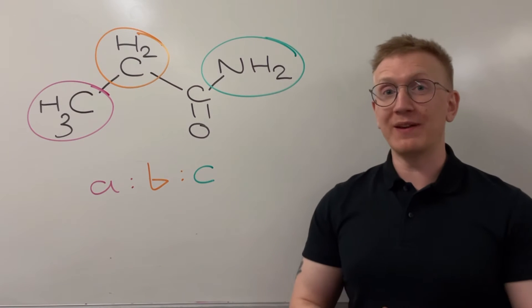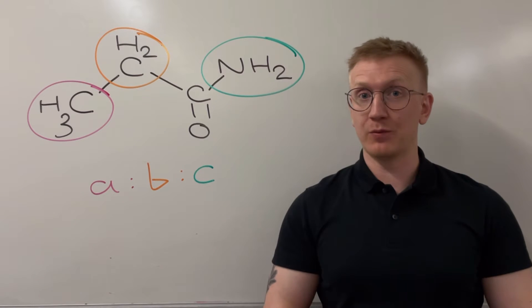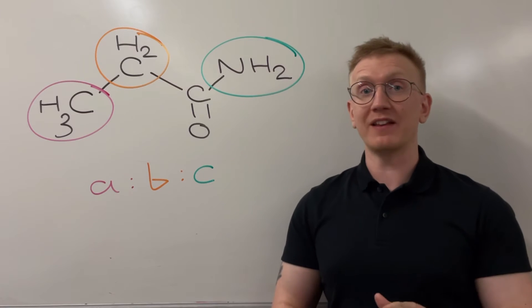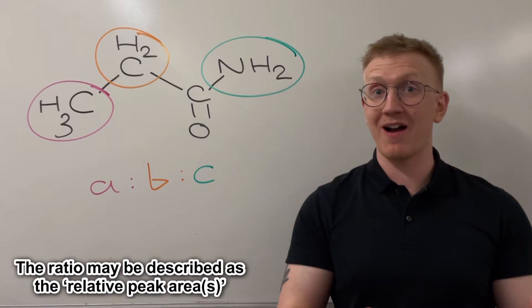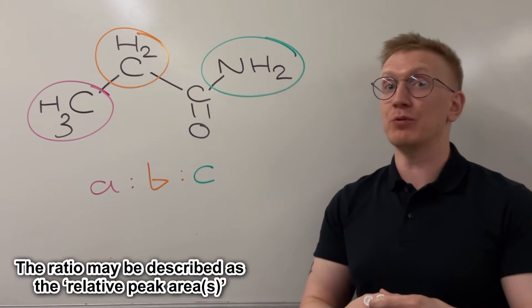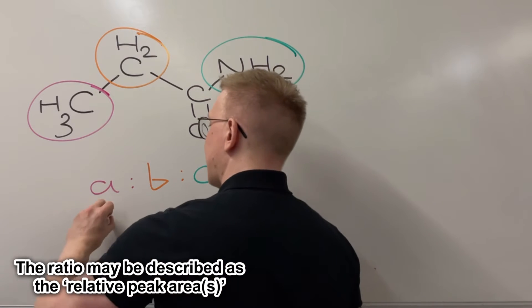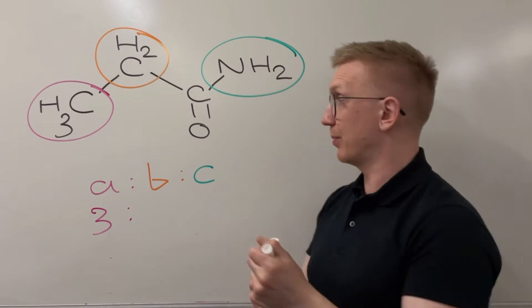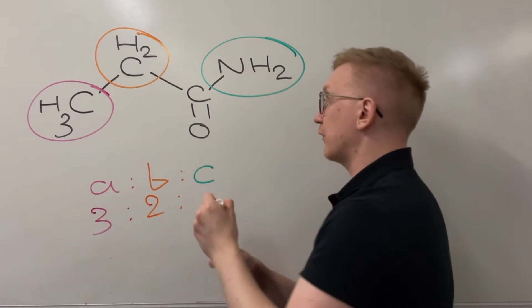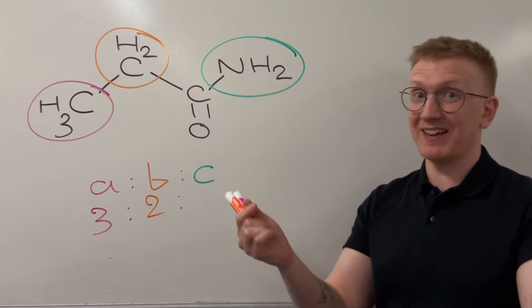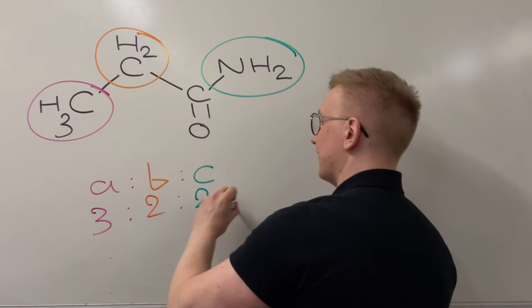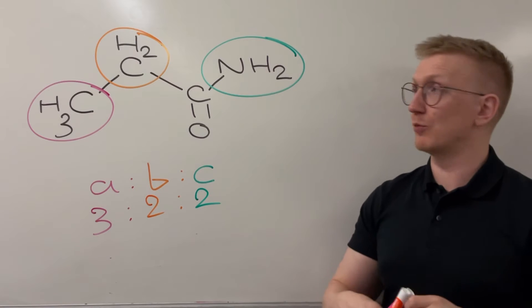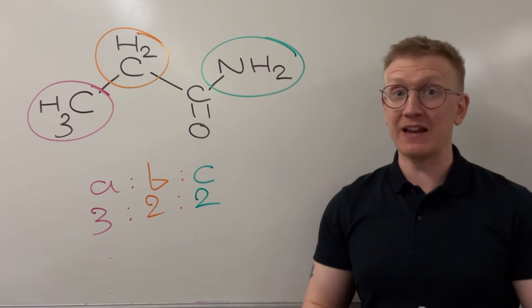So next up, what we're going to be doing is looking at what the ratio is like between these. What we use at A-level is the number of hydrogens within the environment, and you normally get the peaks labeled with this in the exam. So what we're going to have is three, because we've got three hydrogens in that CH3 group, to two, because there's two in the CH2, and then finally, you've guessed it, it's going to be two in the NH2 group just here, as part of this amide functional group.